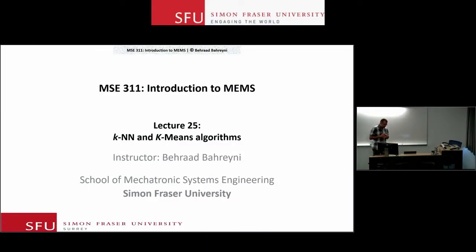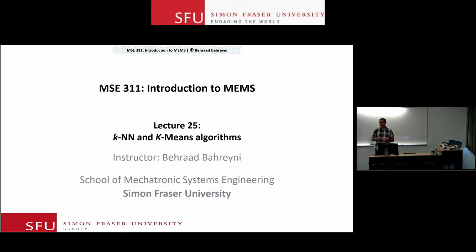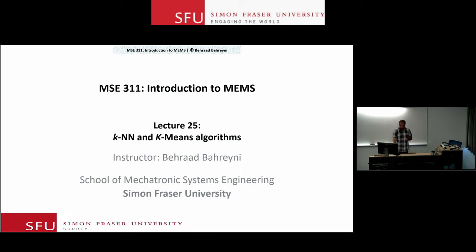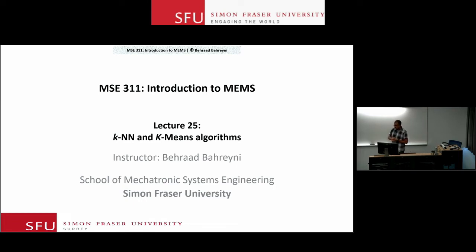We talked about classification in supervised learning in the previous lecture. We introduced a couple of simple algorithms: naive Bayes, decision trees, and logistic regression. For regression problems, we talked about linear regression, providing a new viewpoint into how that algorithm works, including issues like variance and bias, sample size, and related topics.